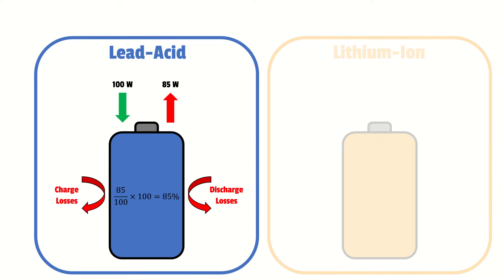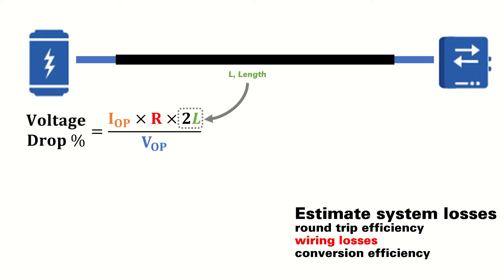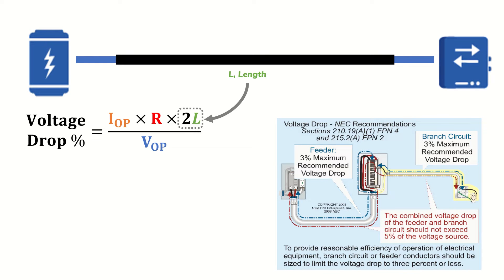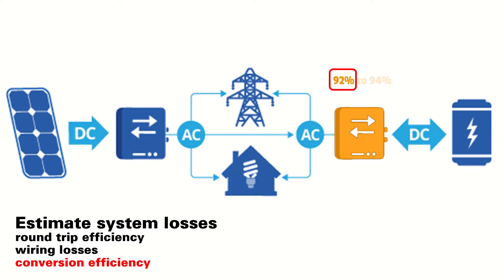For this example we'll use a lead acid battery with a round trip efficiency of 85%, corresponding to a factor of 0.85. For wiring losses, the voltage drop across a wire largely depends on its length, and we typically want less than 2–3% voltage drop, so we'll assume a wire efficiency of 97% or a factor of 0.97. Next, we consider the conversion efficiency of a battery inverter — battery inverters typically have efficiencies ranging between 92 to 94%. In this AC coupled system we'll assume the battery inverter has an efficiency of 92%.